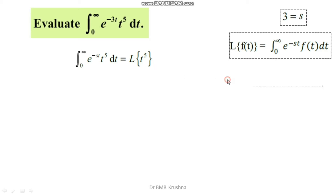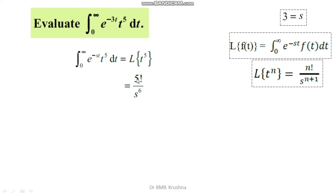We know that the Laplace transform of t^n is n! divided by s^(n+1). That gives us 5! divided by s^6, since n is 5 here. Simplifying, 5! equals 5 × 4 × 3 × 2 × 1 = 120, so the result is 120 divided by s^6.